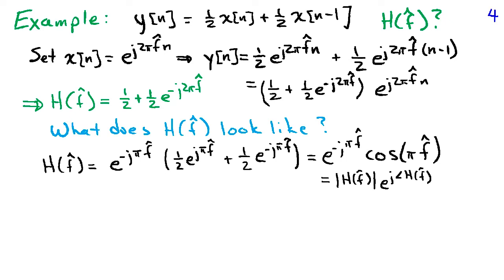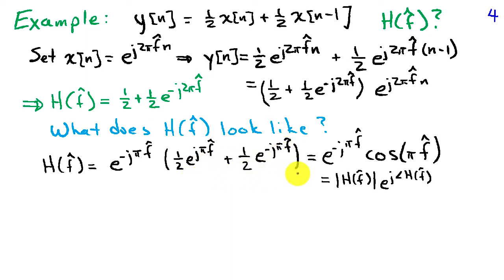We're going to use a simple trick to simplify this expression: factor out half of this exponent from both terms. E to the minus j pi f-hat is half of the exponent. If we pull that out of both terms, we need to have one-half e to the j pi f-hat plus one-half e to the minus j pi f-hat inside. The benefit is we can immediately recognize that H of f-hat equals e to the minus j pi f-hat times cosine of pi f-hat.